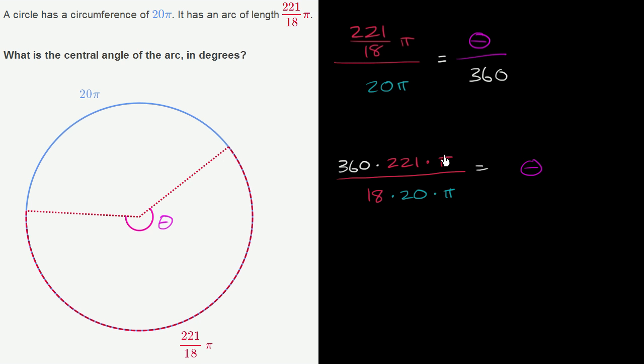Let's see, π divided by π is going to be 1. 360 divided by 20, well, it's going to be the same thing as 36 over 2, which is the same thing as 18. And 18 divided by 18 is 1. So this all simplified to 221 degrees. Theta is 221 degrees.